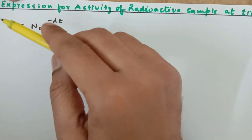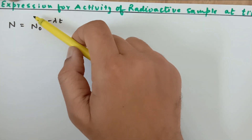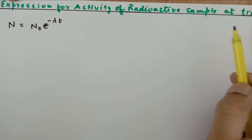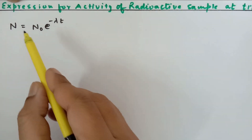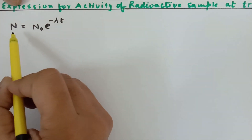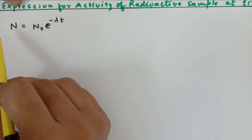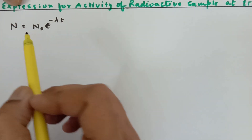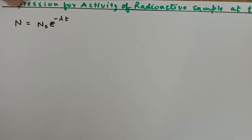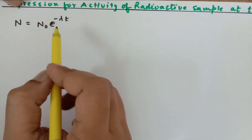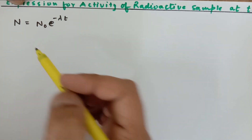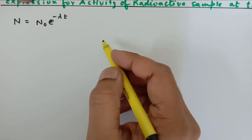In this video lecture we are going to simplify the expression for the activity of a radioactive sample at any time t. This is the radioactive disintegration law. At times this expression creates difficulty for students while solving numericals, so I urge my viewers not to use this expression at all times. We are going to simplify it and reduce it to a further simplified version.